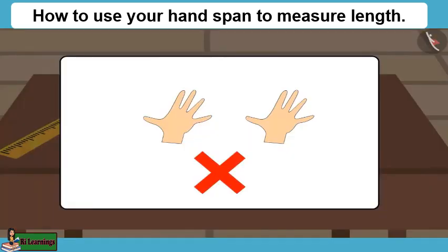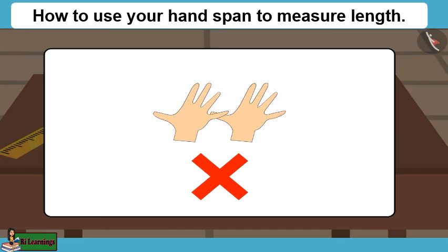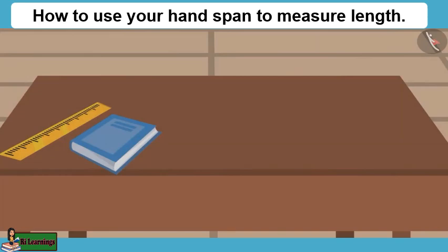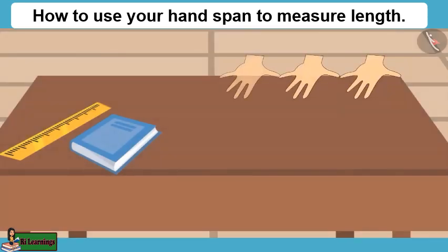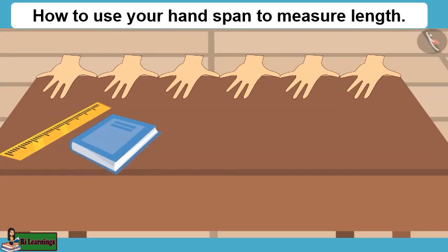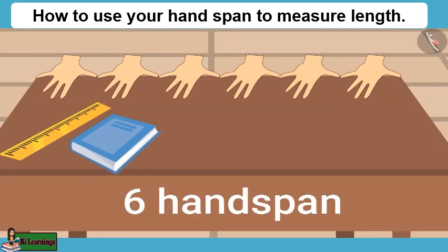While taking measurements, you have to keep in mind that there should be no gap between your hands while measuring any object. We also have to keep in mind that we do not measure any place twice. Let's try once again: 1, 2, 3, 4, 5, and 6. The length of the table is 6 hand spans.